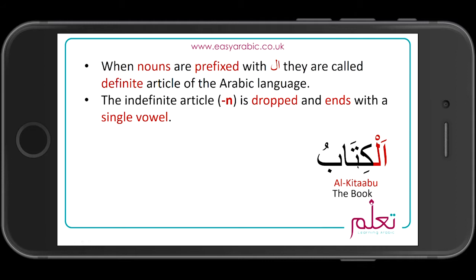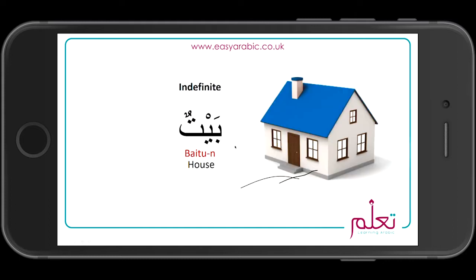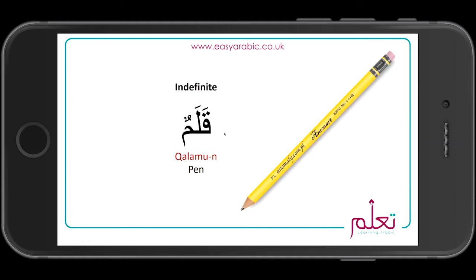So 'kitabun' becomes 'alkitabu' — you say 'bu' if you are joining another word at the end. If it's the last word in the sentence, then it's 'alkitab'. So: alkitab, aljamilatu, albaytu. Baytun becomes albayt. Qulamun becomes alqulam.